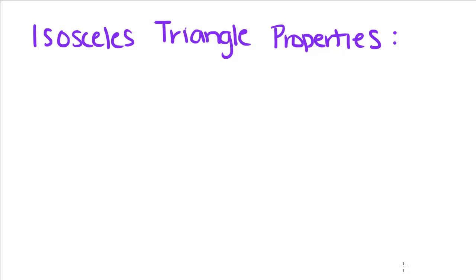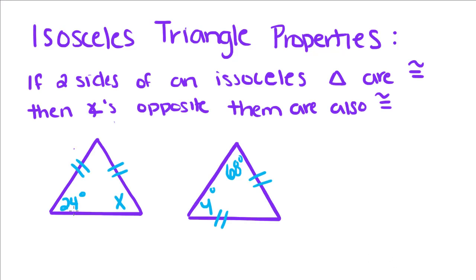Our focus today is isosceles triangles and their properties. If two sides of an isosceles triangle are congruent, then the angles opposite the sides are also congruent.